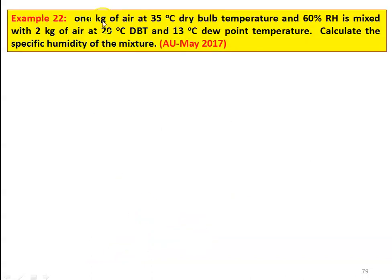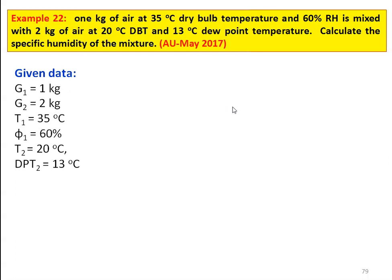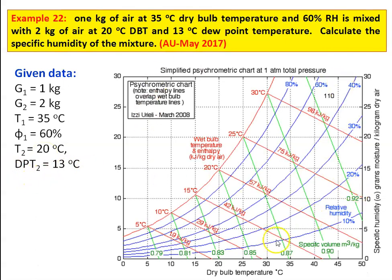We take another example: 1 kg of air at 35°C dry bulb temperature and 60 percent relative humidity is mixed with 2 kg of air at 20°C dry bulb temperature and 13°C dew point temperature. Calculate the specific humidity of the mixture. Given: G1 = 1 kg, G2 = 2 kg, T1 = 35°C, φ1 = 60%, T2 = 20°C, dew point temperature = 13°C. Take the psychrometric chart and locate the first point at 35°C and 60% relative humidity. For the dew point temperature of 13°C, you read horizontally to locate point 2.